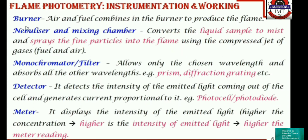The burner uses air and fuel combined to produce a flame. The nebulizer and mixing chamber together convert a liquid sample to mist and spray fine particles into the flame using the compressed jet of fuel and air. A monochromator — using a prism filter or diffraction grating — allows only the chosen wavelength and absorbs all others. The detector, a photocell or photodiode, detects the intensity of the emitted light and generates a proportional current. The meter displays the intensity: higher the concentration, higher the intensity and higher the meter reading.